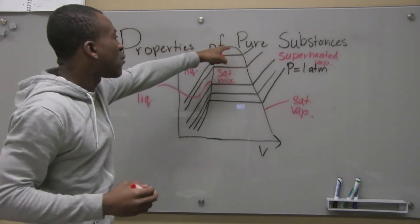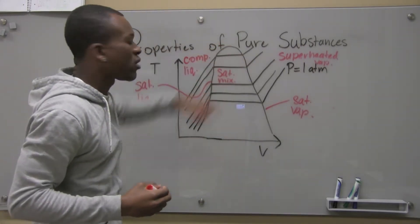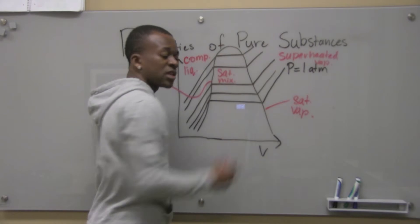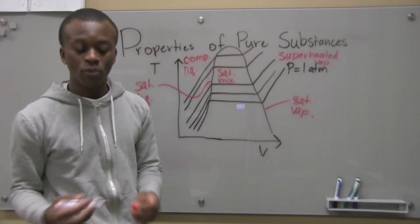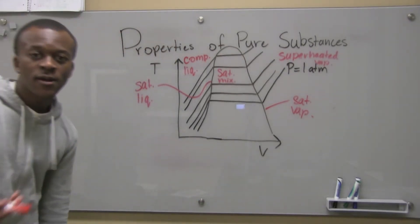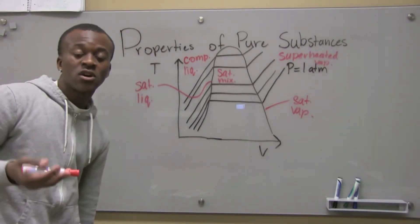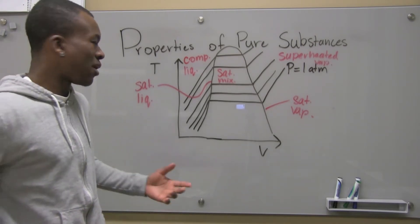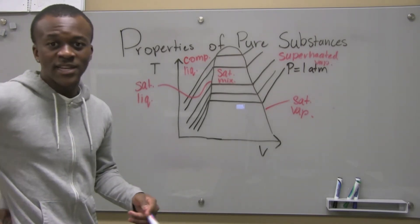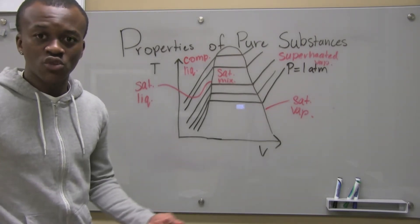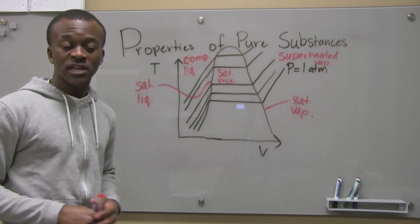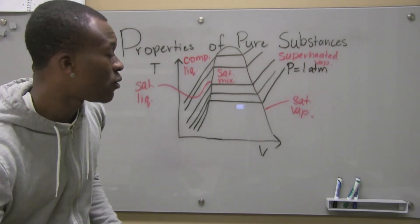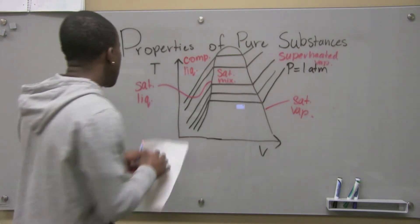You might be asking what happens at the very top of the dome. This is something called the critical point — that's just where the phases are sort of indistinguishable. It doesn't come into play too much, but just keep that in mind.